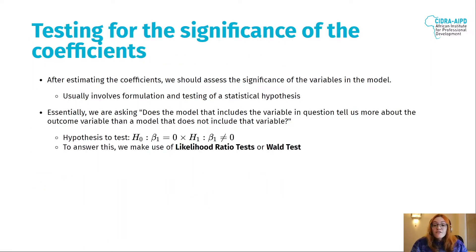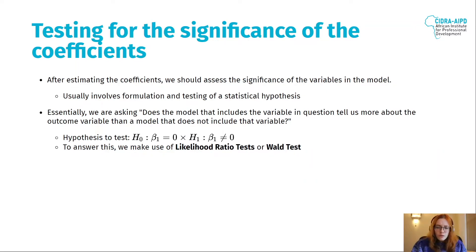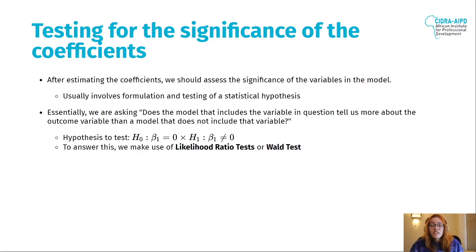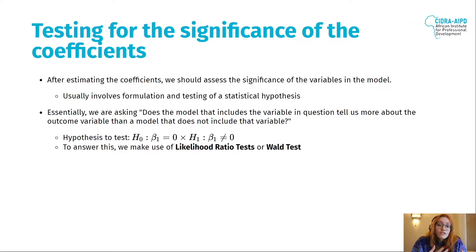Now that we got the values of the coefficients using the glm function, what we should do is test for the significance of the coefficients. It might be that those coefficients are not statistically significant, so they shouldn't be in the model, but we need to test. That involves statistical hypothesis testing.